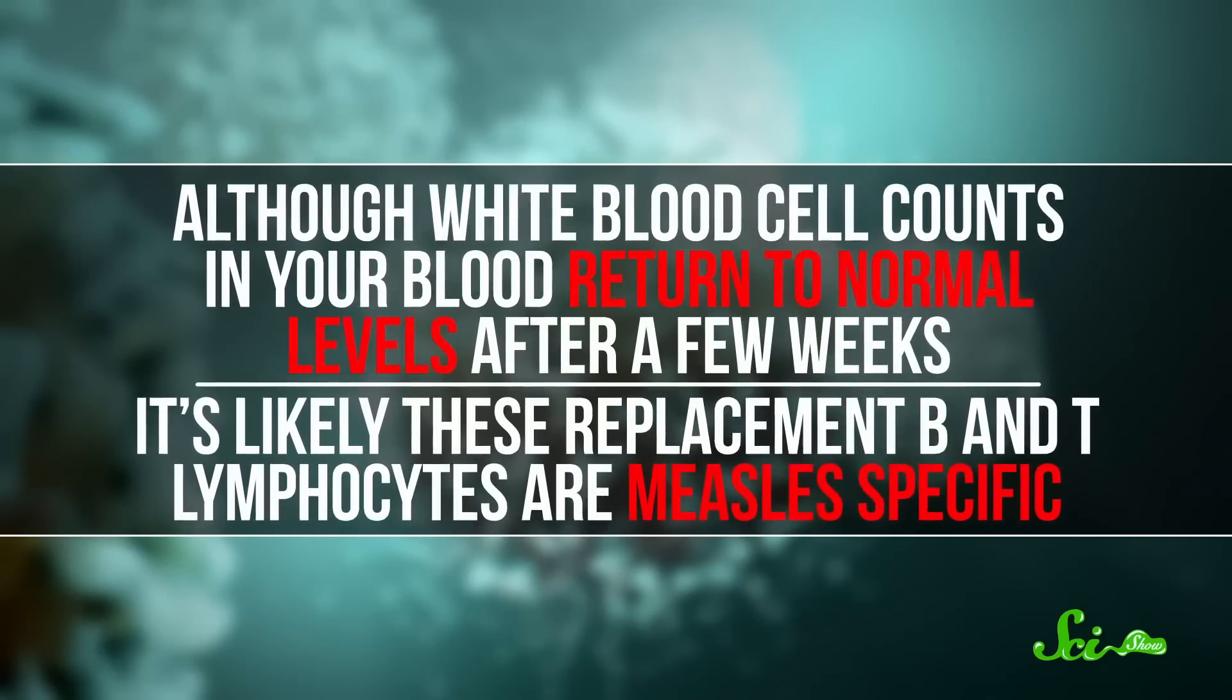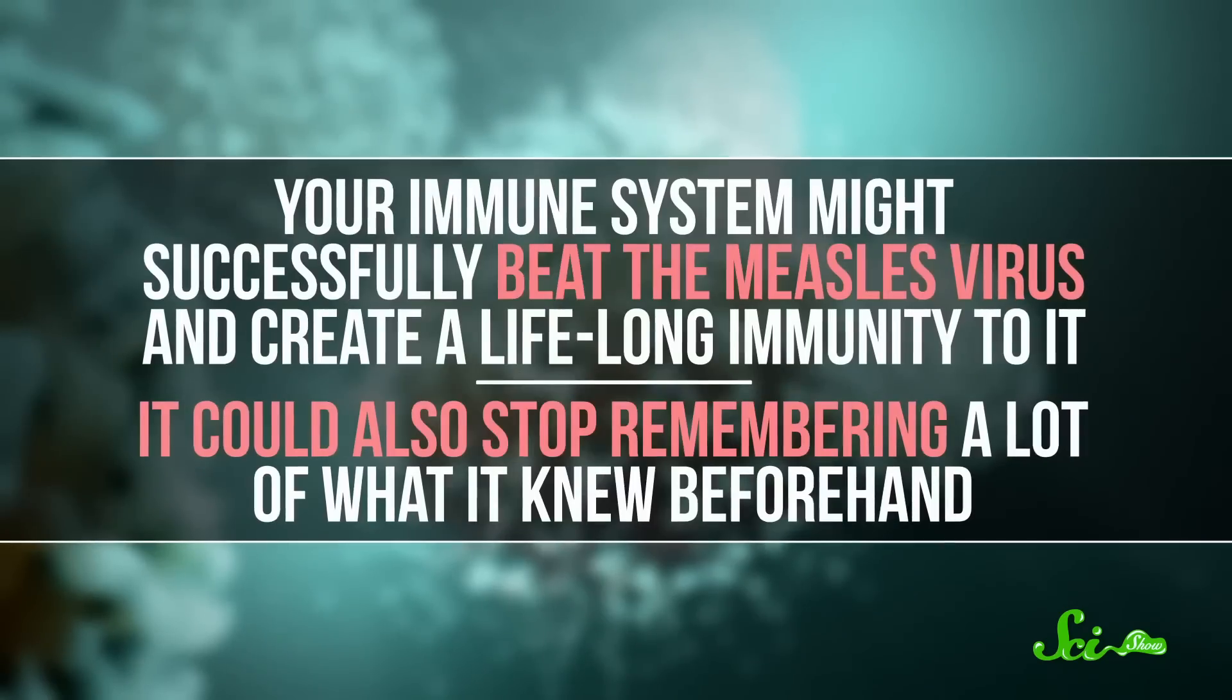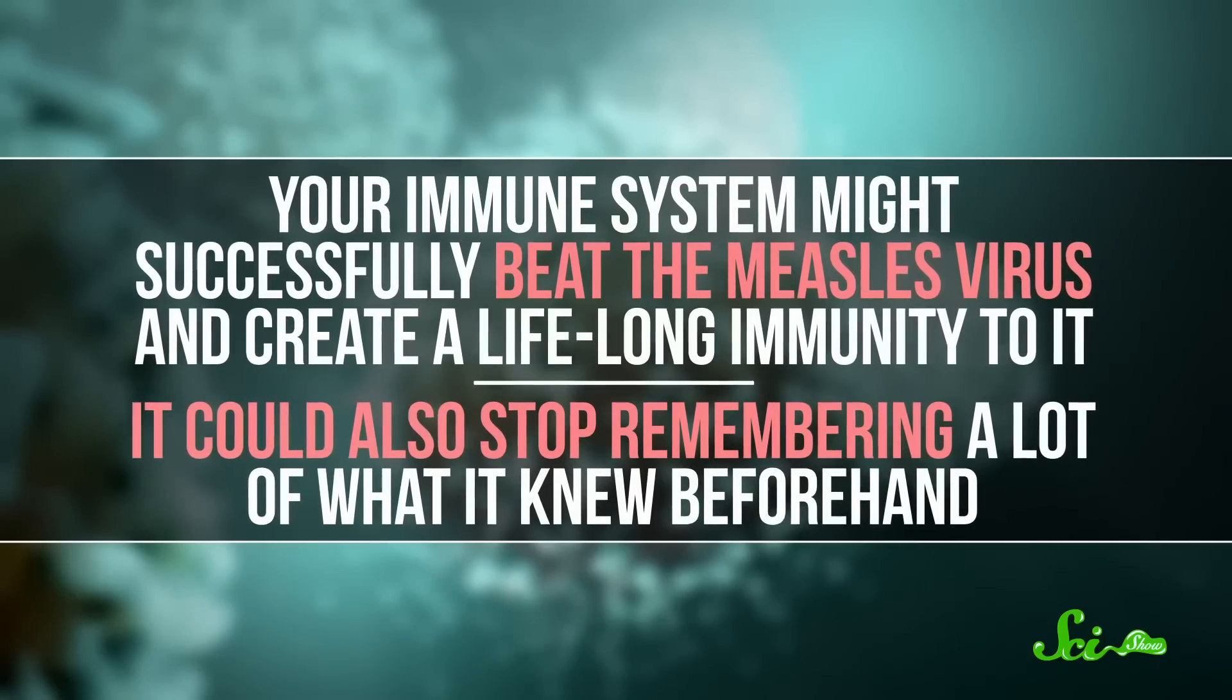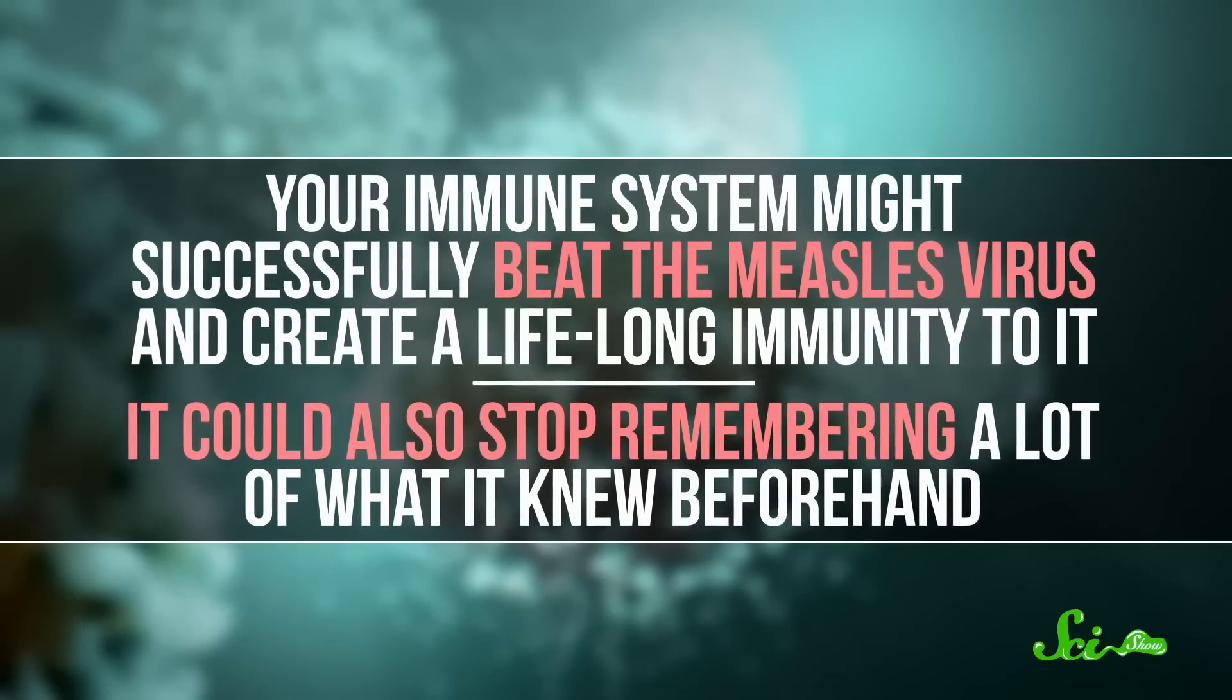it's likely these replacement B and T lymphocytes are measles-specific. So your immune system might successfully beat the measles virus and create a lifelong immunity to it, but it could also stop remembering a lot of what it knew beforehand.